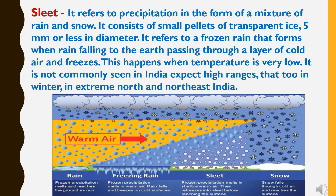Sleet refers to precipitation in the form of a mixture of rain and snow. It consists of small pellets of transparent ice, 5 mm or less in diameter. It refers to frozen rain that forms when rain falling to earth passes through a layer of cold air and freezes. This happens when temperature is very low, and it is not commonly seen in India except in high ranges, in winter in extreme north and northeast India.